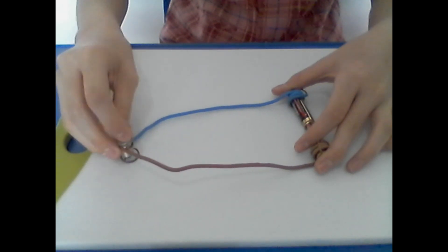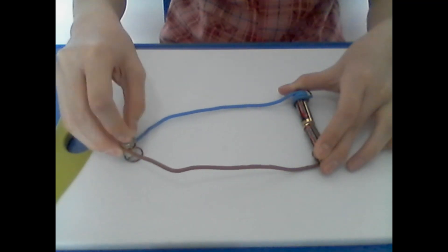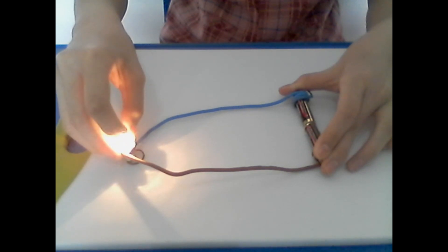If it doesn't, then you can try to put some tape on it, so it'll be faster than using your hands. So, that is how you make an electric circuit.